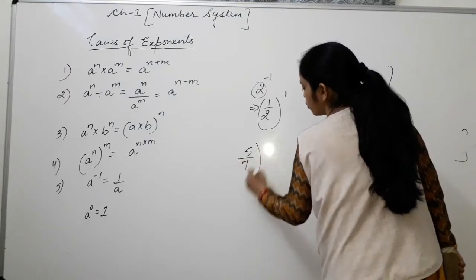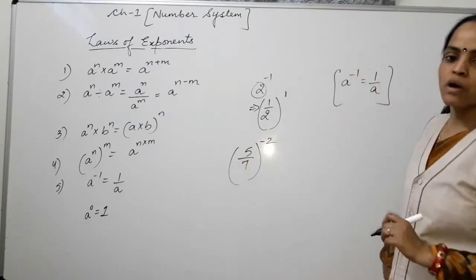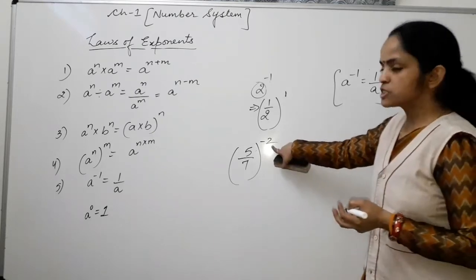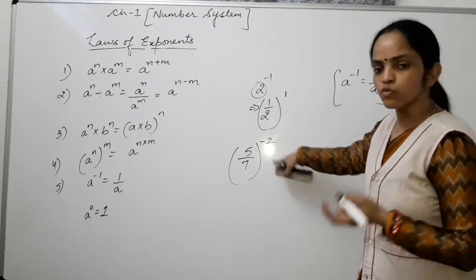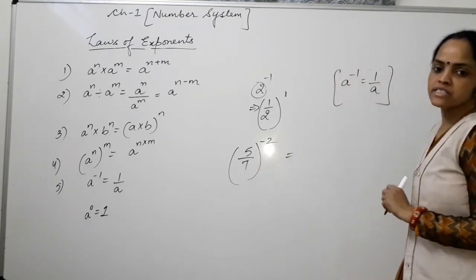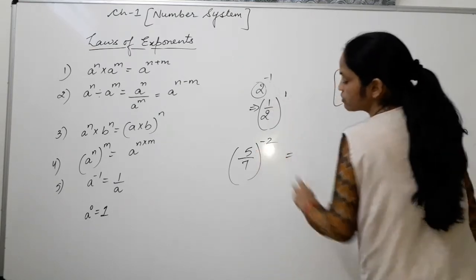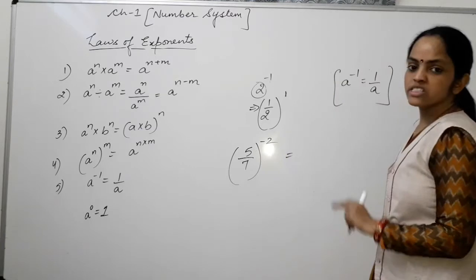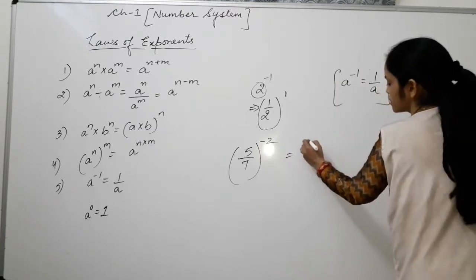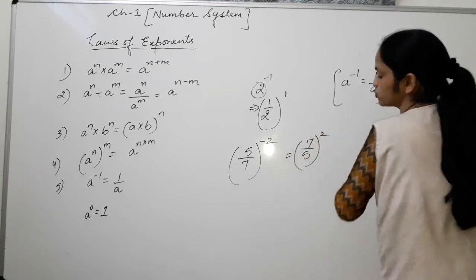Another example: 5 upon 7, whole raised to the power minus 2. To make this power positive, we do the reciprocal of the base number. The reciprocal of 5 upon 7 is 7 upon 5. So the answer is 7 upon 5, whole raised to the power 2.